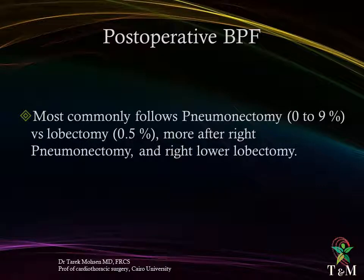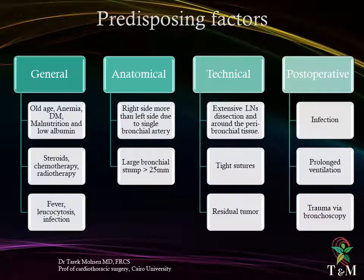Post-operative bronchopleural fistula is the most common form and follows pneumonectomy in up to 9%, lobectomy in up to 0.5%, and more often after right pneumonectomy and right lower lobectomy. Predisposing factors can be general, anatomical, technical, or post-operative. Among the general causes: old age, anemia, diabetes mellitus, malnutrition, low albumin, intake of steroids, chemotherapy, radiotherapy, fever, and infection.